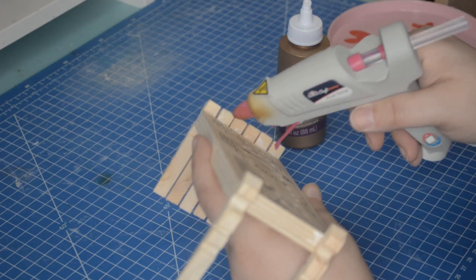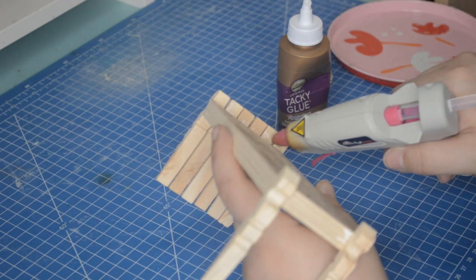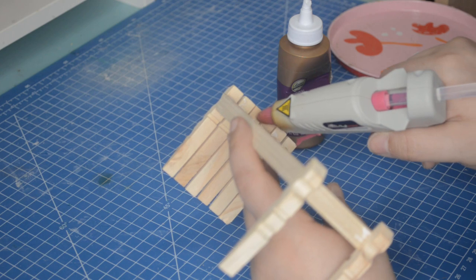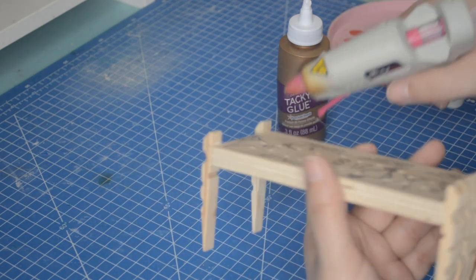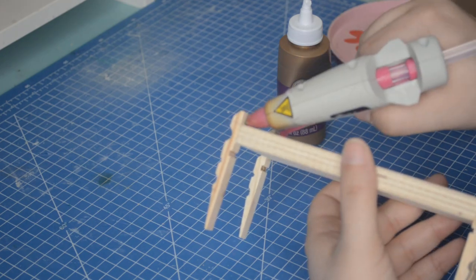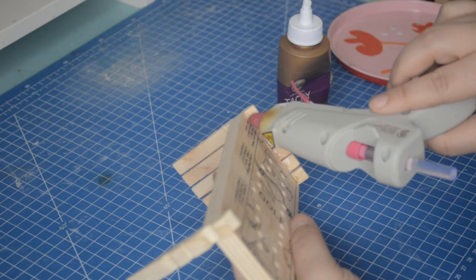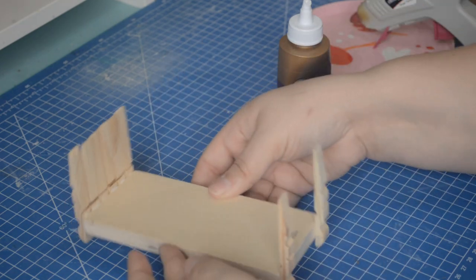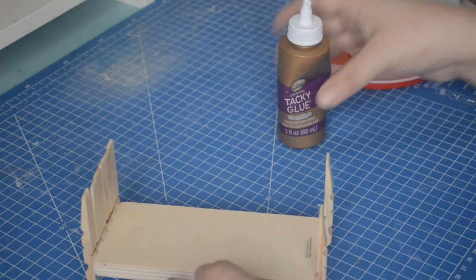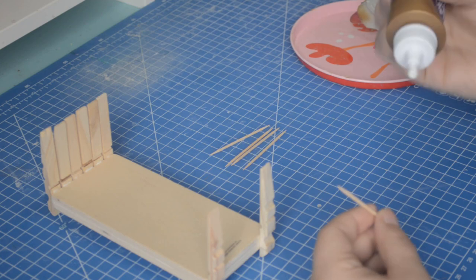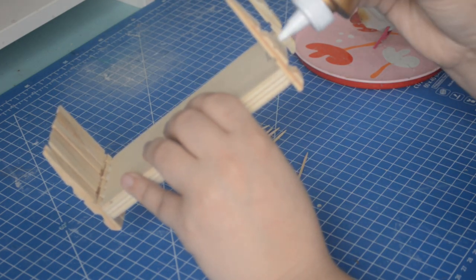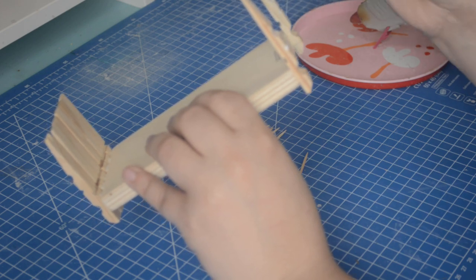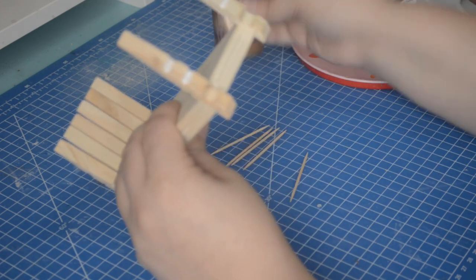I used a little hot glue on the bottom to make sure I had a strong bond and also because I'm impatient. Using a couple toothpicks, we will add two bars to the notches of the clothespins to make a footboard. Let everything dry super well.